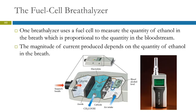Electrochemistry is also involved in law enforcement. A breathalyzer — one type uses a fuel cell, which is an electrochemical cell, to measure the quantity of ethanol in your breath. The ethanol in your breath is proportional to the quantity of ethanol in your bloodstream, and the magnitude of the current in this fuel cell corresponds to the quantity of ethanol in the breath.